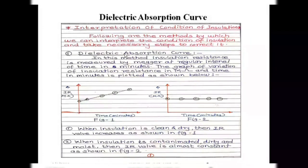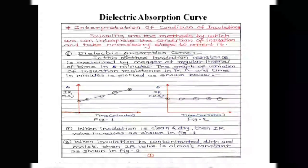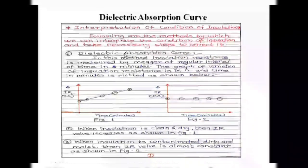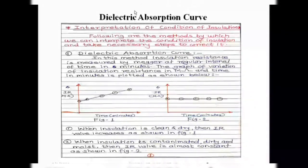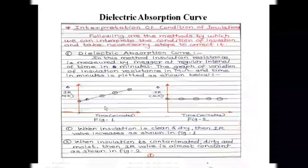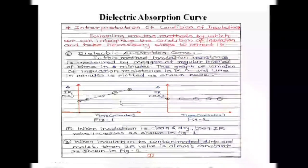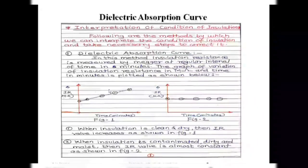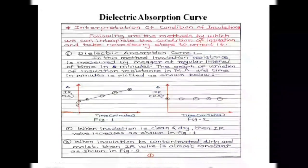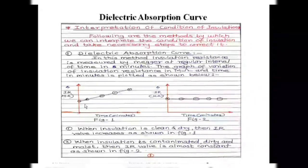First, we'll take the dielectric absorption curve. To plot this curve, we take readings of the insulation resistance of the windings of the given electrical equipment or machine. Readings are taken every one minute after starting the megger test — at least five readings are needed. On the x-axis we plot time in minutes, and on the y-axis we plot insulation resistance in megaohms as measured by the megger.